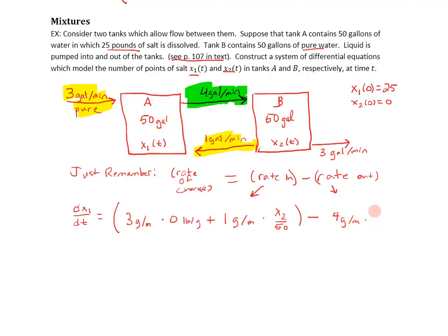So I'm going to add this one gallon per minute. And what is the concentration of what's coming in? Well the concentration is going to be the amount of substance in there divided by its volume. So X₂ over 50 and that's in pounds per gallon. So this is all the rate in and now what's the rate out? What's leaving? So what's leaving, I'm going to do here in green, four gallons per minute at whatever concentration A is at any given time t. So that's minus four gallons per minute times its concentration, which is X₁ divided by 50, the amount of salt in there divided by its volume.